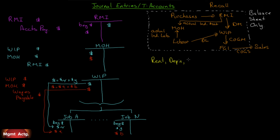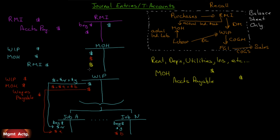For general manufacturing overhead — rent, depreciation, utilities, insurance, and so on — these increase manufacturing overhead actual costs. We call the credit accounts payable. We do not call it rent expense or utilities expense because it cannot be an income statement account. It must be a balance sheet account. It only shows up on the income statement when it's sold, recorded as cost of goods sold. Now let's finish this last arrow — manufacturing overhead into work in process. We'll get to that step by step.